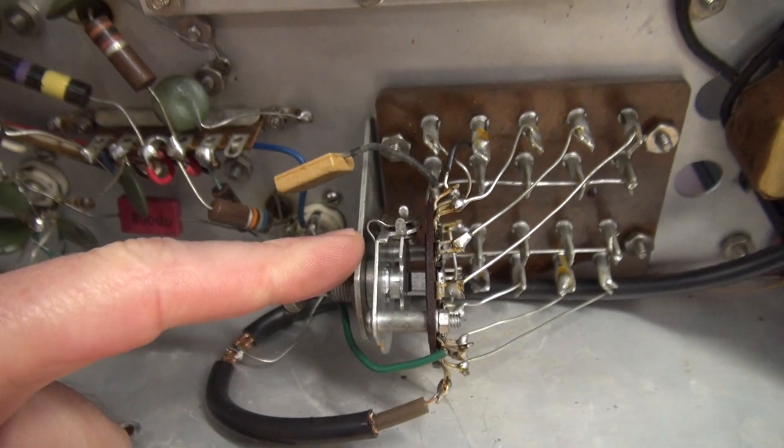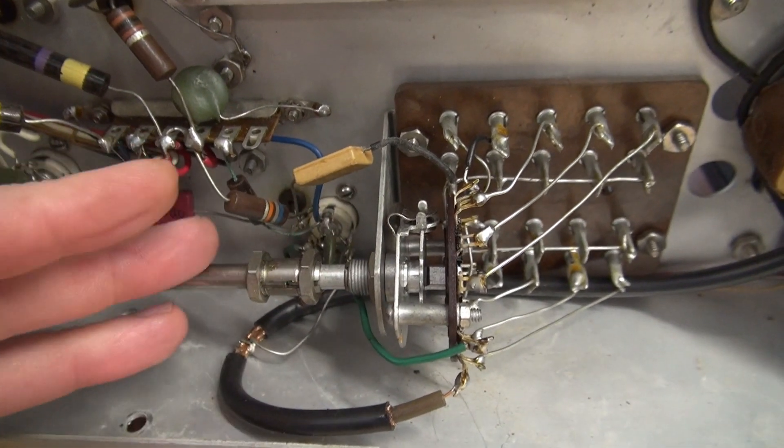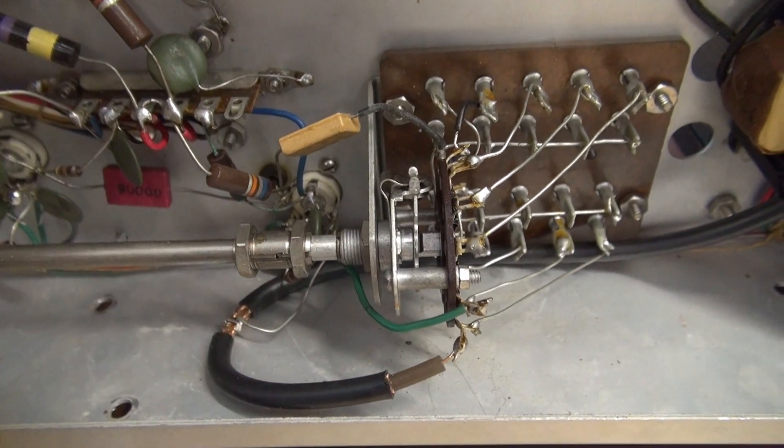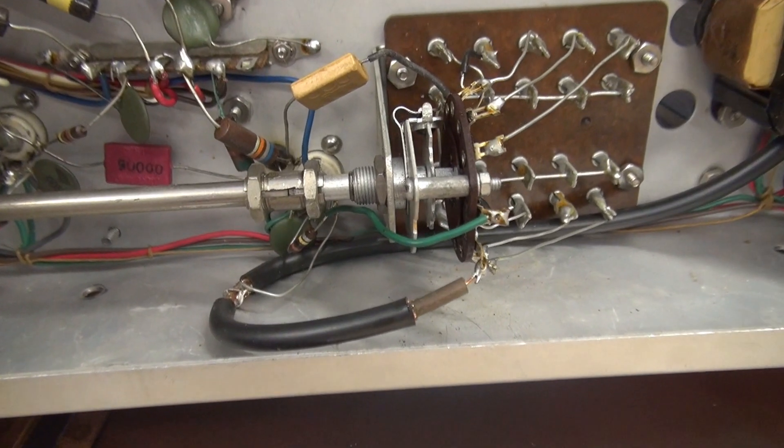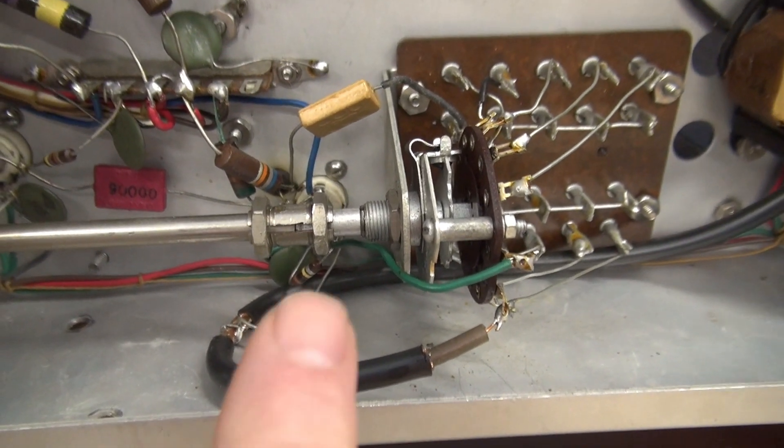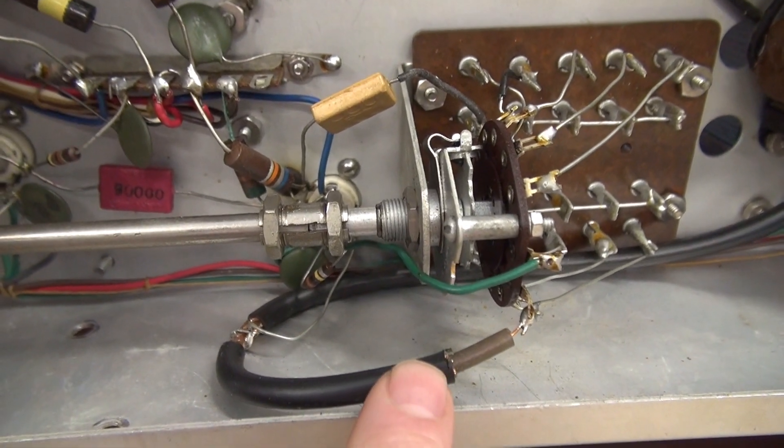Most guys would replace the entire switch, but I'm going to take this one apart and repair it. I've shown this repair on other radios, but I thought it would be interesting to do one on the Viking 2.